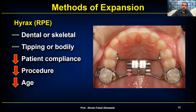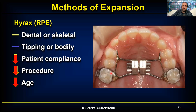Rapid palatal expanders are roughly half dental, half skeletal — a mix of tipping and bodily movement. Compliance isn't an issue since it's fixed, but patients must activate the screw at home, which some won't do. Banding the fours and sixes makes it more tedious. Age is a limitation: ideally before ossification of the mid-palatine suture, so before about age 13.